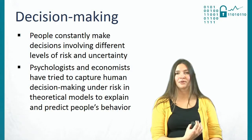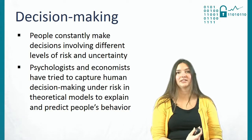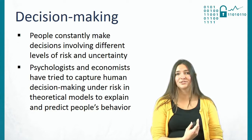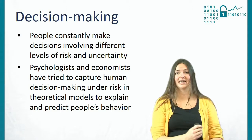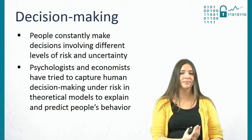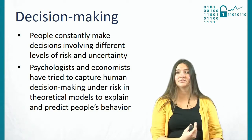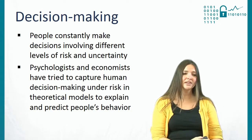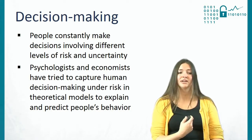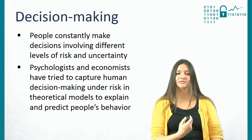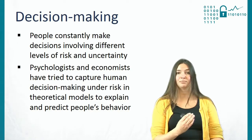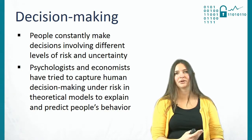People constantly make decisions involving different levels of risk and uncertainty. Just think about all the decisions you had to make between getting up this morning and arriving at work — what were you going to have for breakfast, what were you going to wear, and is it safe to cross the street? Because decisions have such a large effect on how we behave, psychologists and economists have tried to capture human decision-making under risk in theoretical models to both explain and predict how people are going to behave.